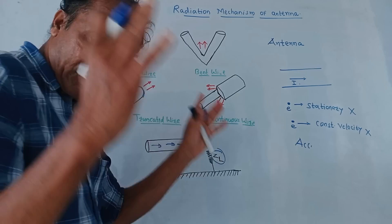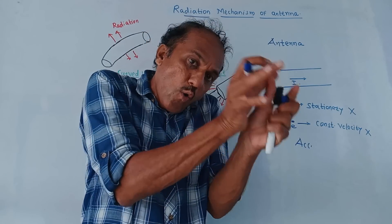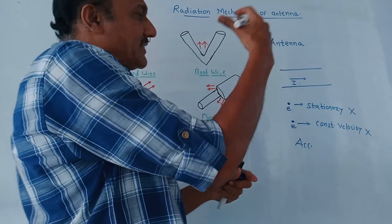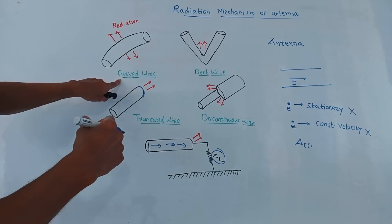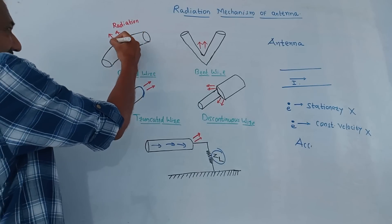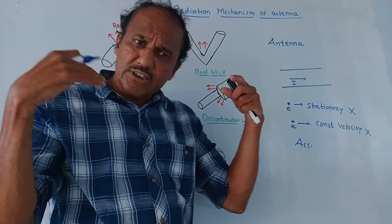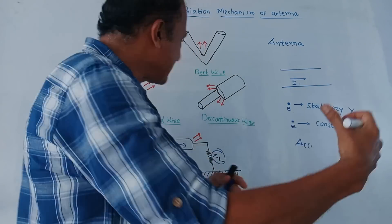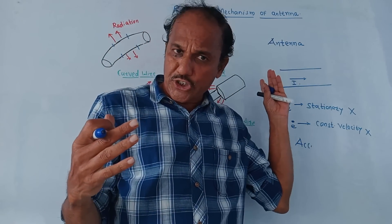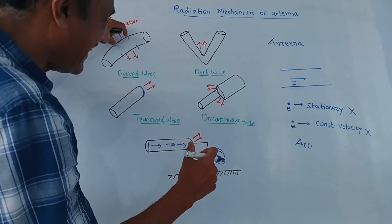We will discuss the single wire structure acting as an antenna and how electromagnetic waves are generated from it. First is the curved wire. As shown in the diagram, the wire is curved. At the curved end, there will be a sudden change in the velocity of moving electrons. At this curved portion, there is acceleration or deceleration, because of which radiation comes out from both ends.